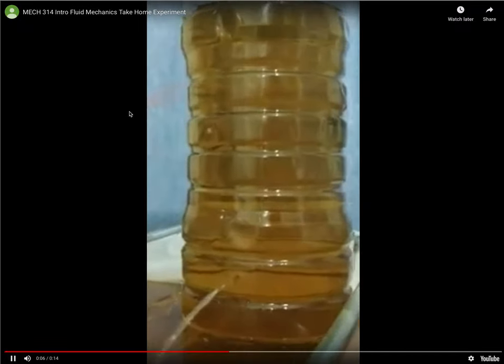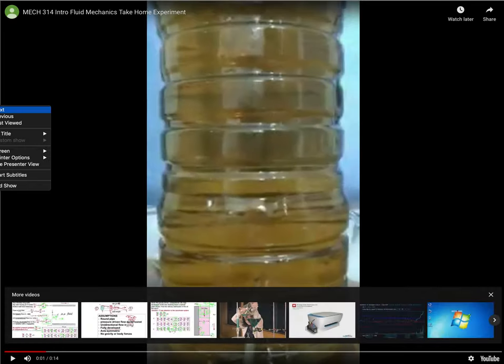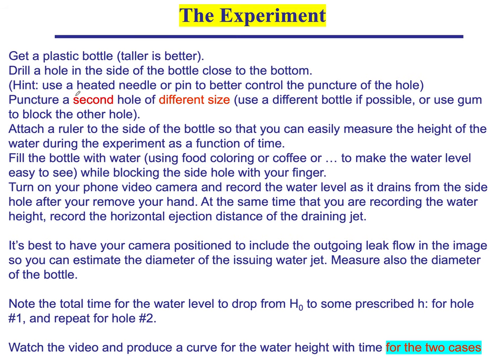The experiment is already on YouTube. You get a bottle, drill a hole on the side, and let it empty out. I'd like you to do it twice — once for a small hole and once for a large hole diameter — because we want to examine how our assumptions hold as the ratio D1/D2 becomes less and less extreme, and whether we see deviations.